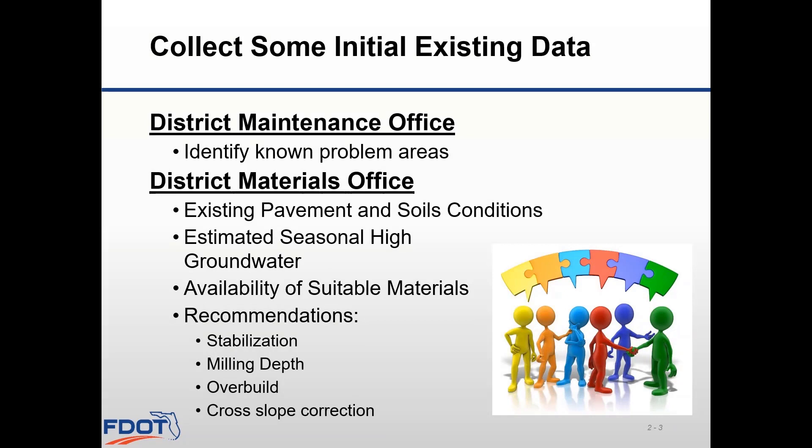Now that you're familiar with the scope, it's time to start gathering as much existing data as you can. A good place to start is with your district maintenance office. Since they maintain these facilities over the years, they're familiar with any problem areas within your project limits. They can give you information on where failures have occurred, how often they've occurred, and what they've done to repair them. This is all critical information for the pavement design so we can make sure to address any issues with our construction project.